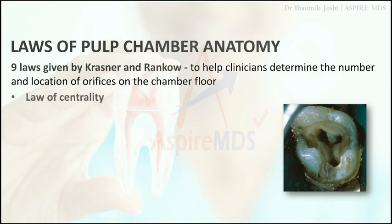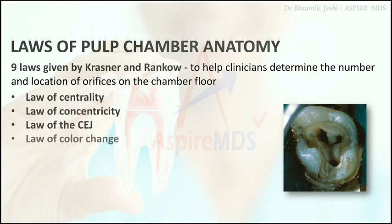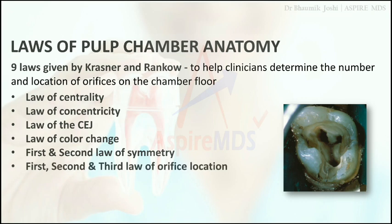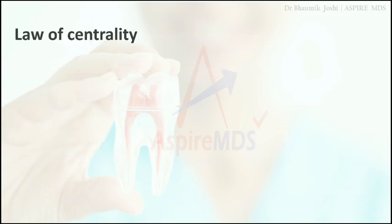There are nine laws: law of centrality, law of concentricity, law of CJ, law of color change, first and second law of symmetry, and first, second and third law of orifice location. Now we will see them one by one.